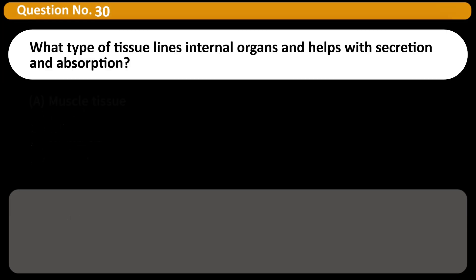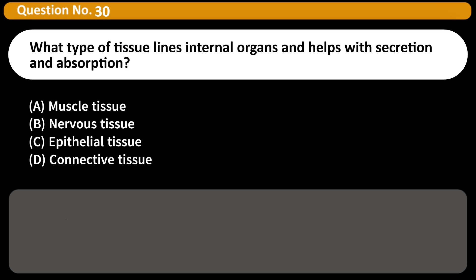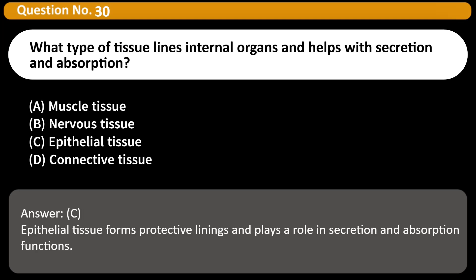What type of tissue lines internal organs and helps with secretion and absorption? A) Muscle tissue, B) Nervous tissue, C) Epithelial tissue, D) Connective tissue. Answer: C. Epithelial tissue forms protective linings and plays a role in secretion and absorption functions.